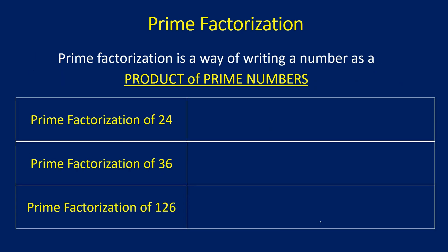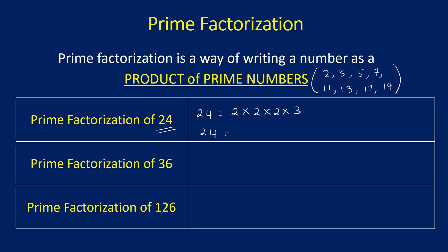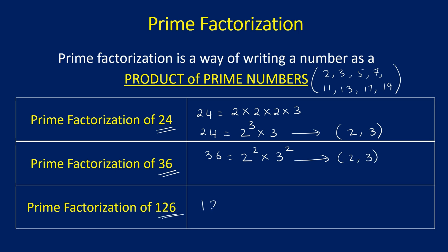Let us now see some more examples. Let us now see prime factorization of 24. Prime factorization is the process of representing a number with prime numbers. The first prime number we use is 2. So 2 into 2 is 4, 4 into 2 is 8, and 8 into 3 is 24. So 24 can be represented as 2 cubed into 3, and 24 is represented by two prime numbers, 2 and 3. What is the prime factorization of 36? 36 can be represented as 2 squared into 3 squared, so 36 is a product of two prime numbers, 2 and 3. What is the prime factorization of 126? 126 can be represented as 2 into 3 squared into 7, so 126 is represented with three prime numbers: 2, 3, and 7.